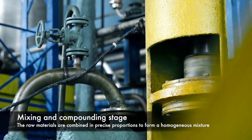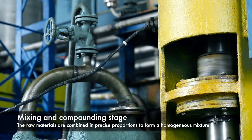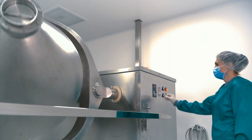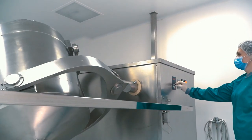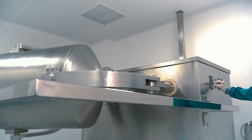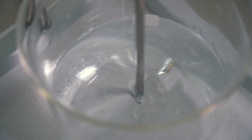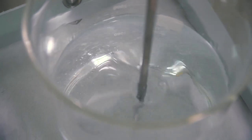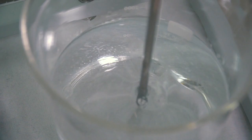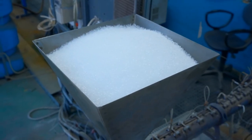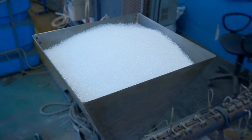In the mixing and compounding stage, the raw materials are combined in precise proportions to form a homogeneous mixture. This mixture is then processed through a series of machines to ensure uniformity and consistency. The mixing process may vary depending on the desired characteristics of the eraser, such as hardness, elasticity, and color. Quality control measures are implemented to monitor the mixture's properties at every stage.